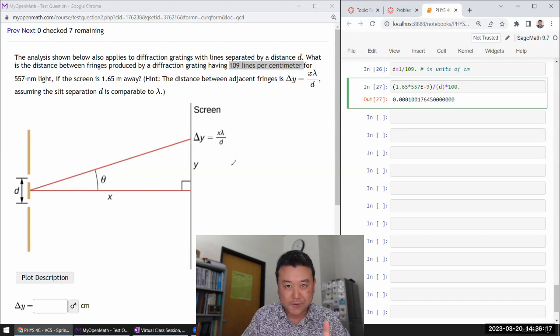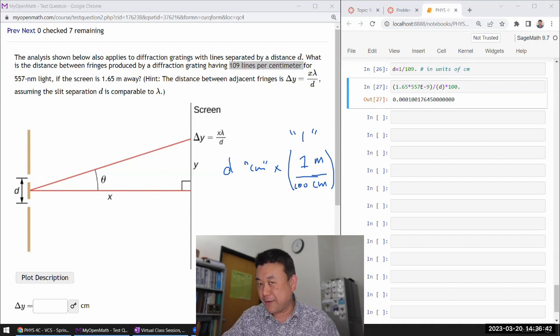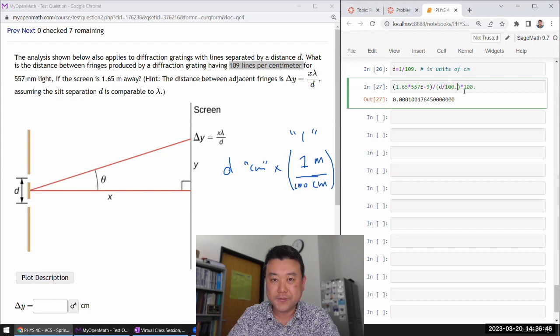Let me do this properly. The number d was in centimeters. For unit conversion you multiply by a factor that's 1 - top and bottom same unit. I want to get rid of centimeters on the numerator, so centimeters on the denominator, meter on the numerator. 1 meter is 100 centimeters, so I should have divided by 100, not multiplied by 100. So divide by 100.